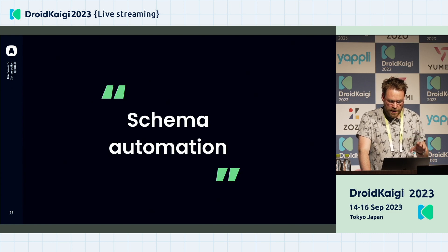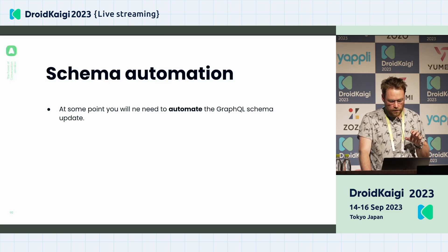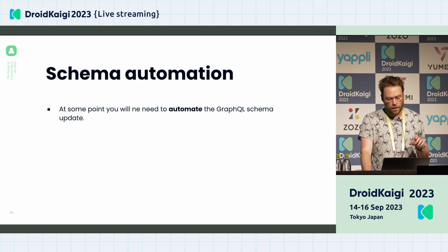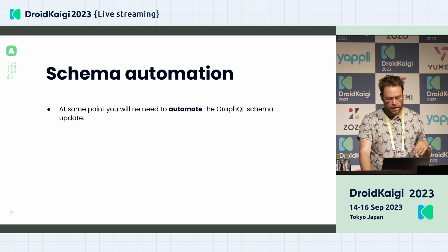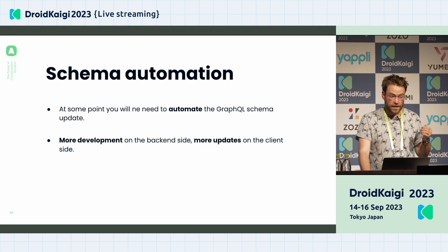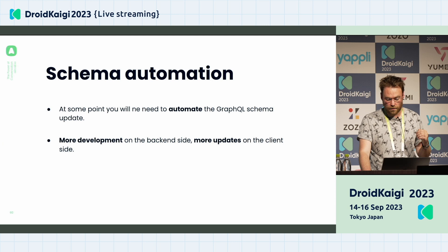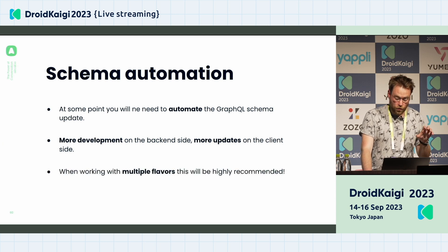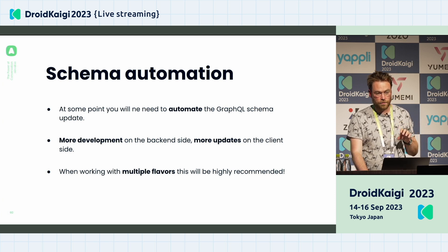Another important thing is schema automation. This is very useful because at some point you will need to automate your GraphQL schema updates. Without that, you'll spend a lot of time and resources updating the schema yourself. When backend development is very active, you'll have lots of updates on the client side, so you need to automate everything. When working with multiple flavors as well, schema automation is highly recommended.